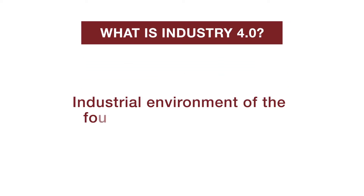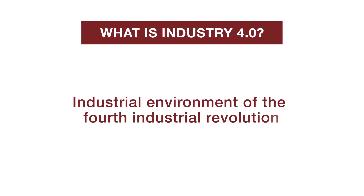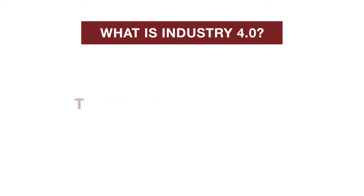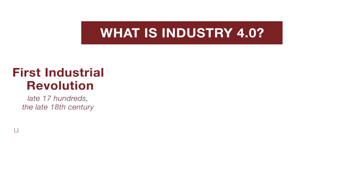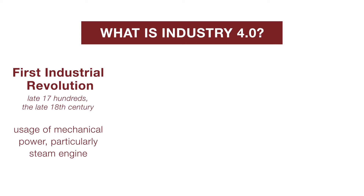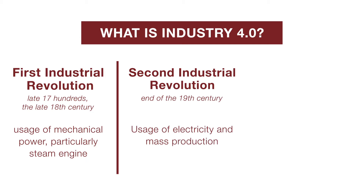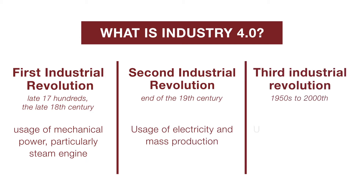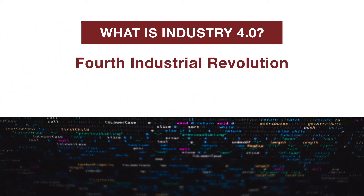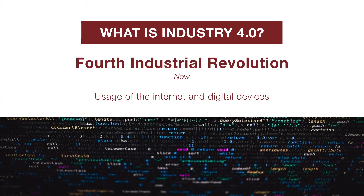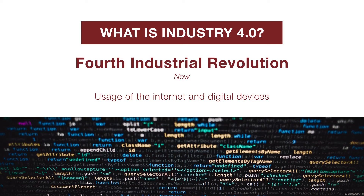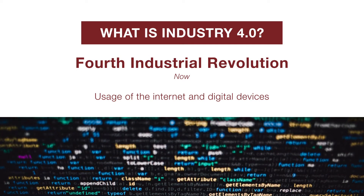Industry 4.0 refers to the fourth industrial revolution. Why fourth? Because we have had three industrial revolutions. They involve the use of mechanical power starting with steam engines instead of animal and human power for agricultural, production and transportation activities, use of electricity and mass production, and then more recently use of computers and automation. Now the fourth industrial revolution pertains to the use of computing devices that are connected to the internet in production and distribution activities in our supply chains.